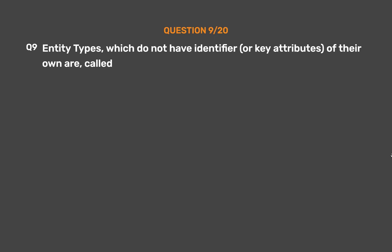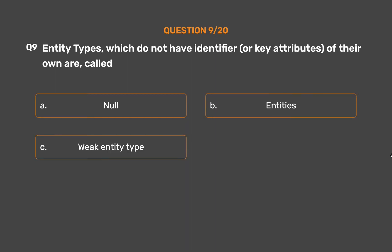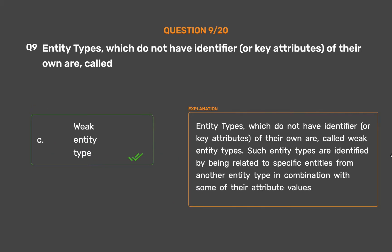Question number 9. Entity types which do not have identifier or key attributes of their own are called: Option A: Null. Option B: Entities. Option C: Weak entity type. Option D: Attribute. The correct answer is Option C: Weak entity type. Entity types which do not have identifier or key attributes of their own are called weak entity types. Such entity types are identified by being related to specific entities from another entity type in combination with some of their attribute values.